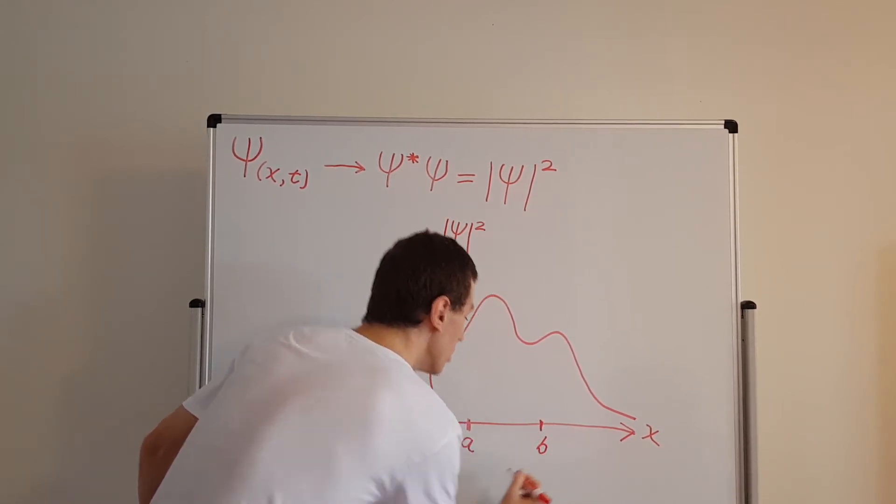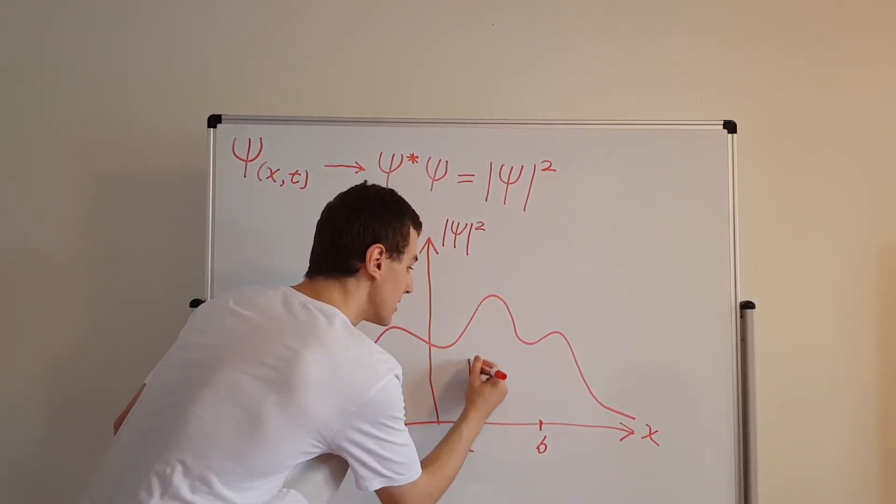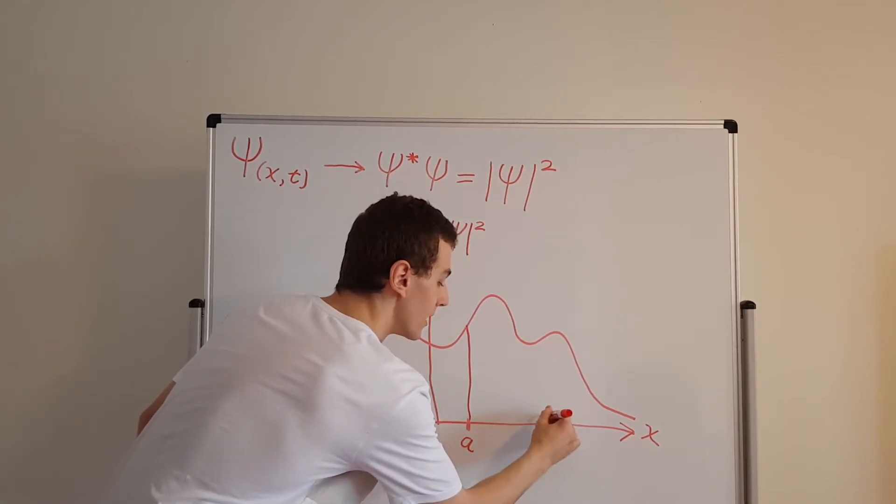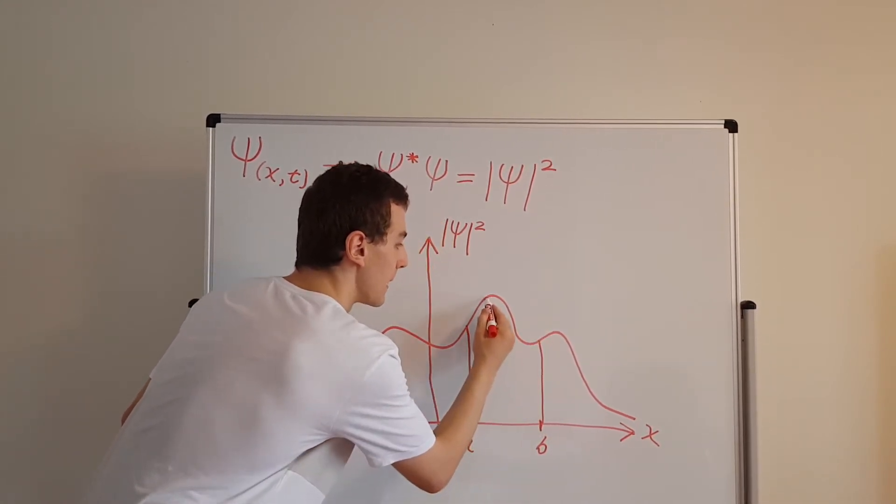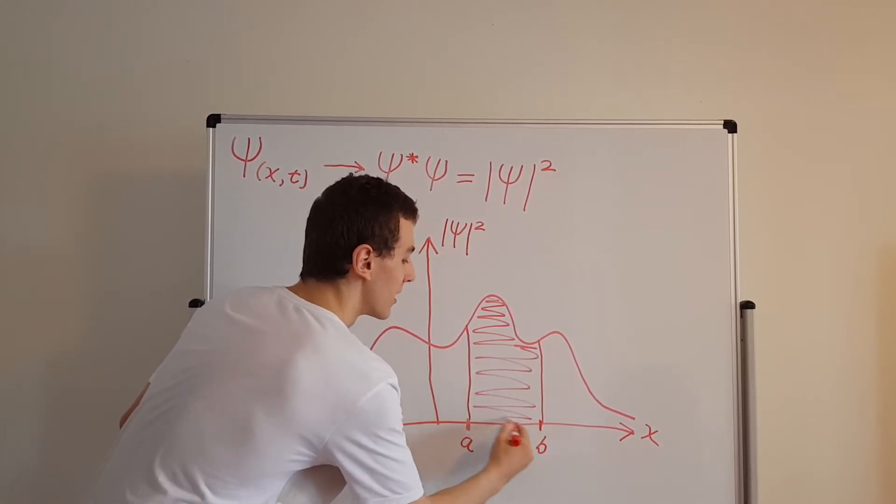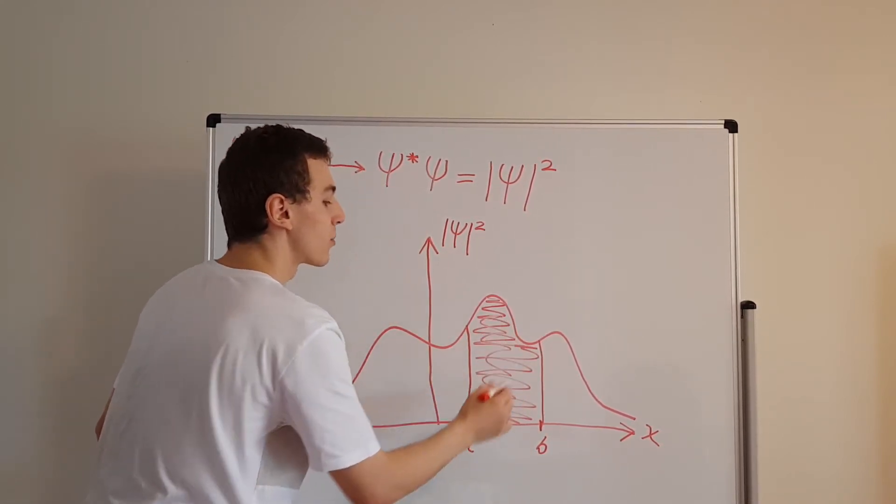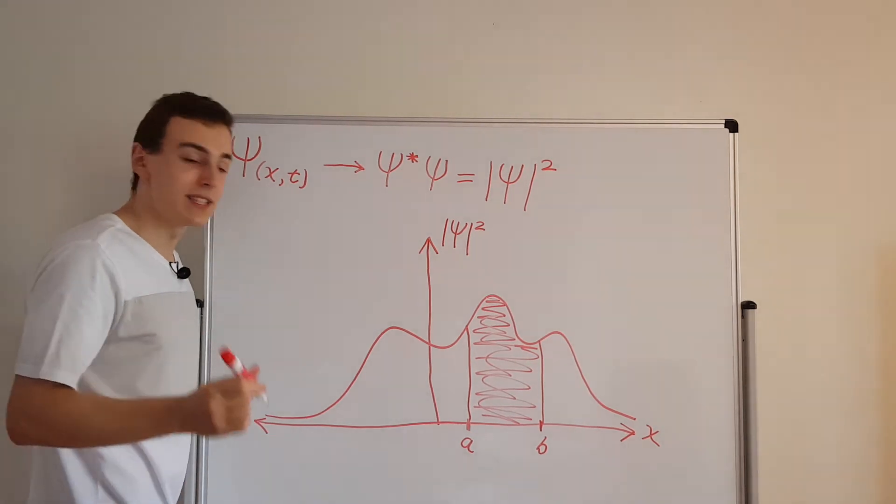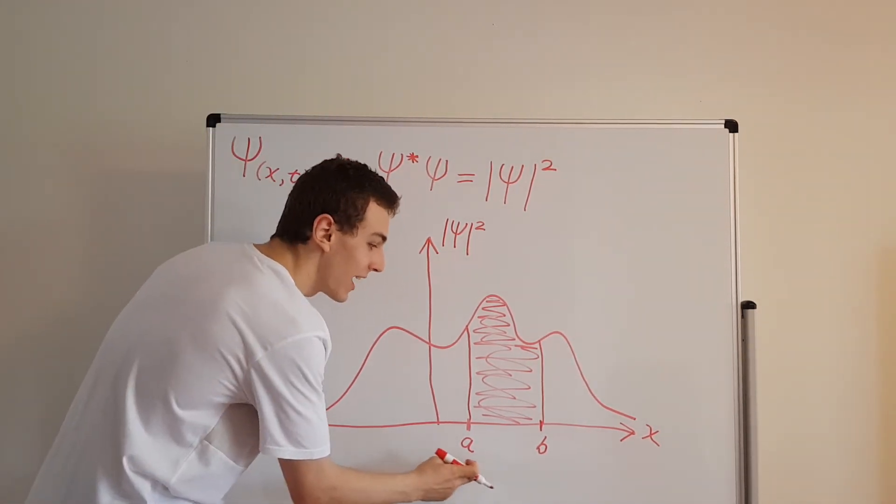What we can do is we can make this interval over here into something meaningful. The area under the curve, this area over here, is actually the probability of measuring the position in between the values of a and b.